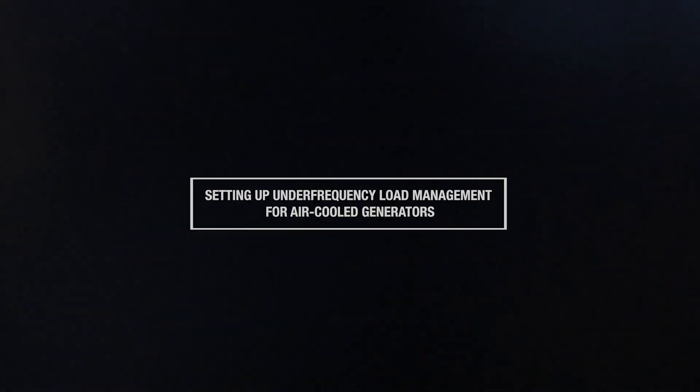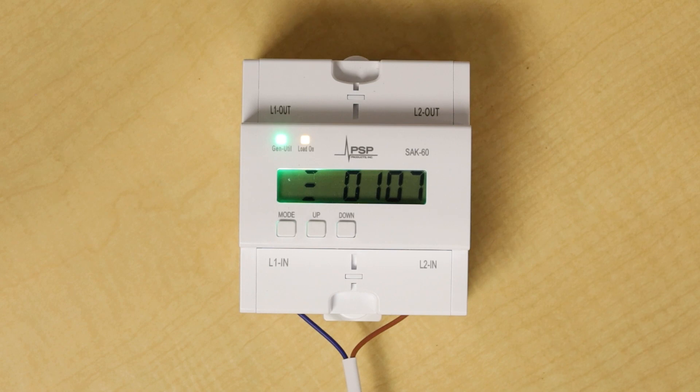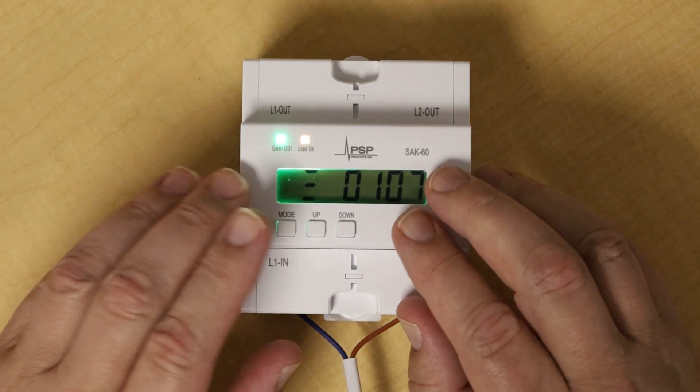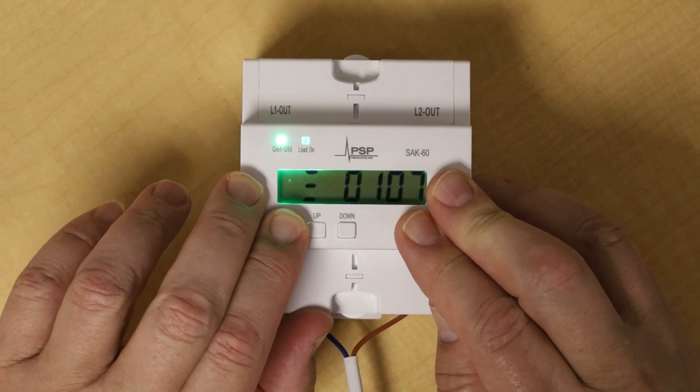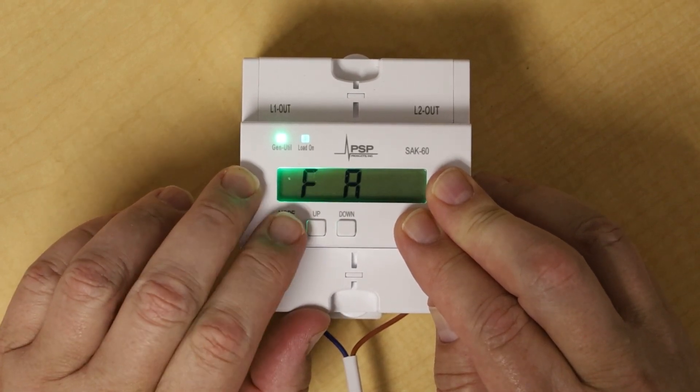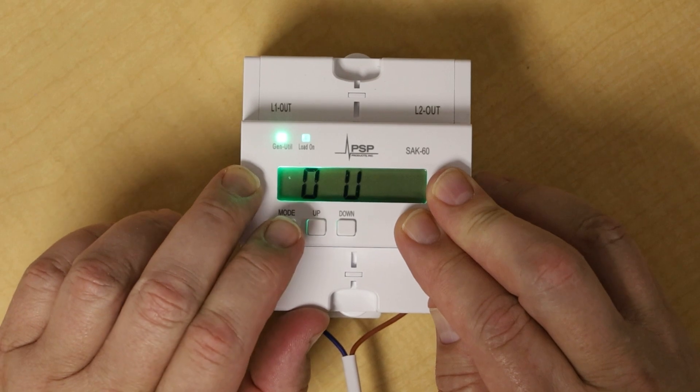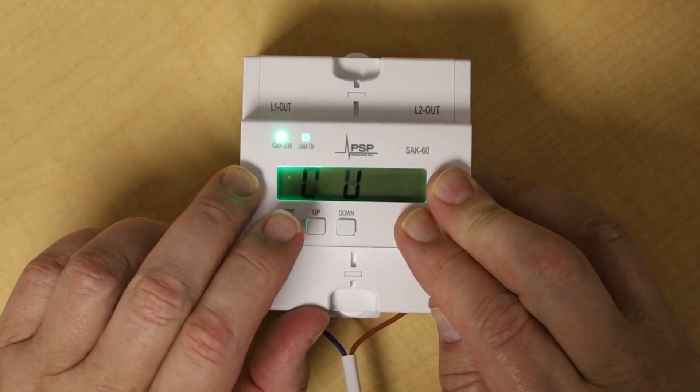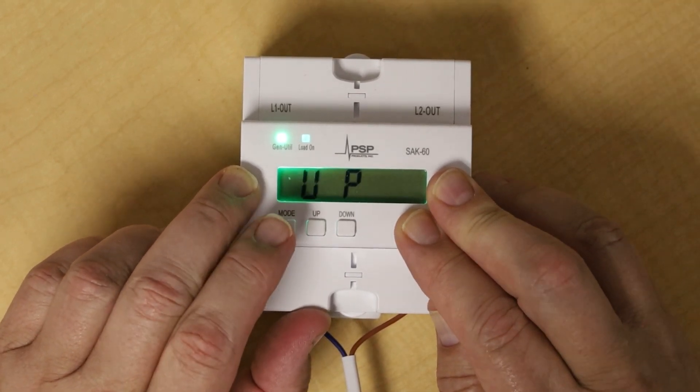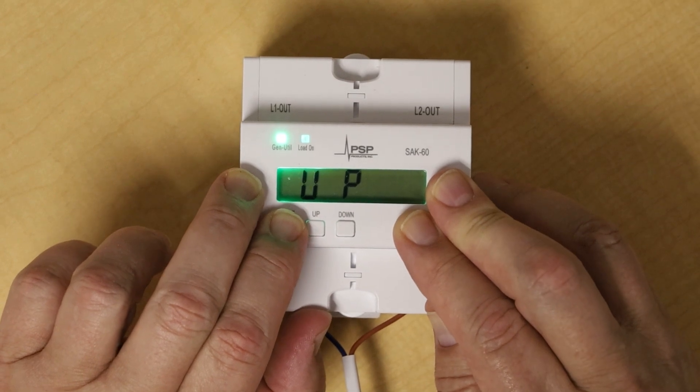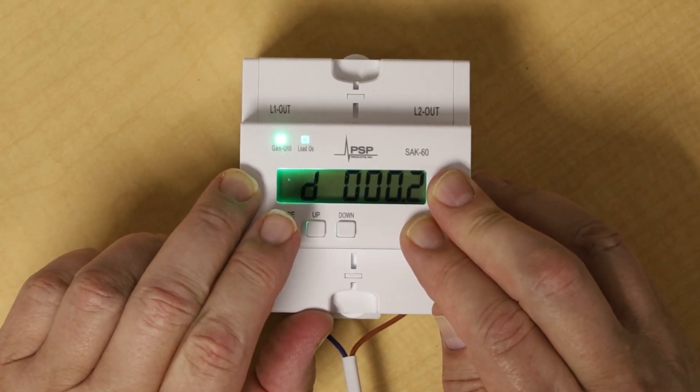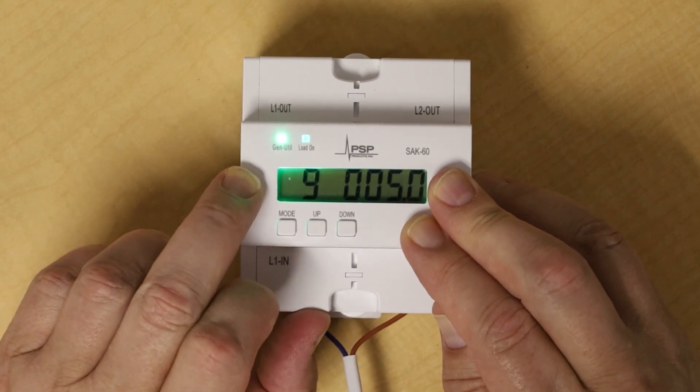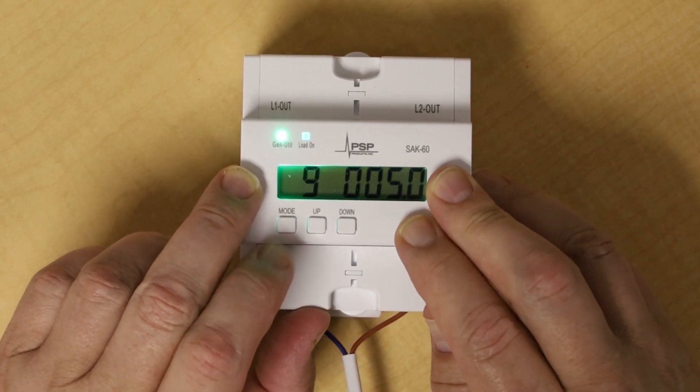To set up the SAK60 version 3 for under frequency load management with an air-cooled generator, first hold the mode button for 3 seconds until 2 digits appear. Press the mode button briefly to scroll to UP. Hold the mode button to enter programming mode. The first setting does not need adjustment. Press the mode button again to scroll to G, which looks like a 9—it's a lowercase g.